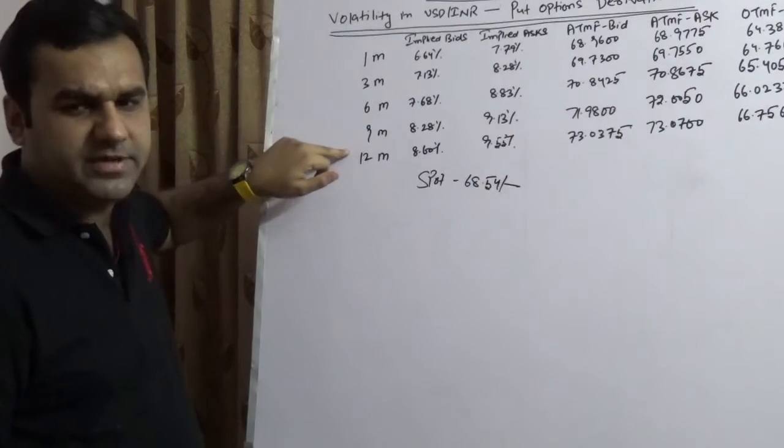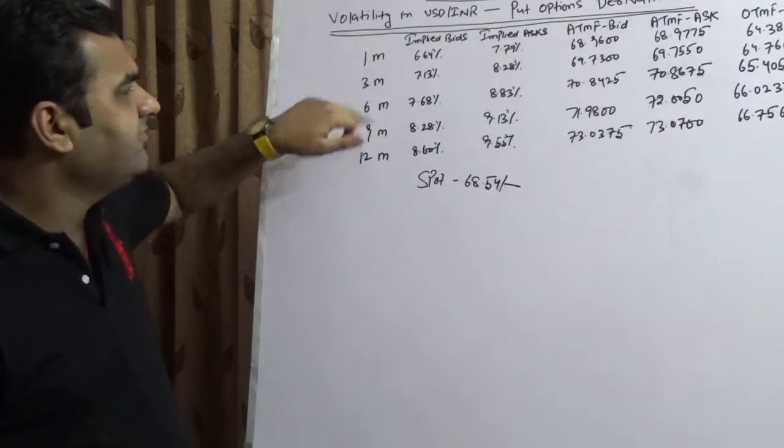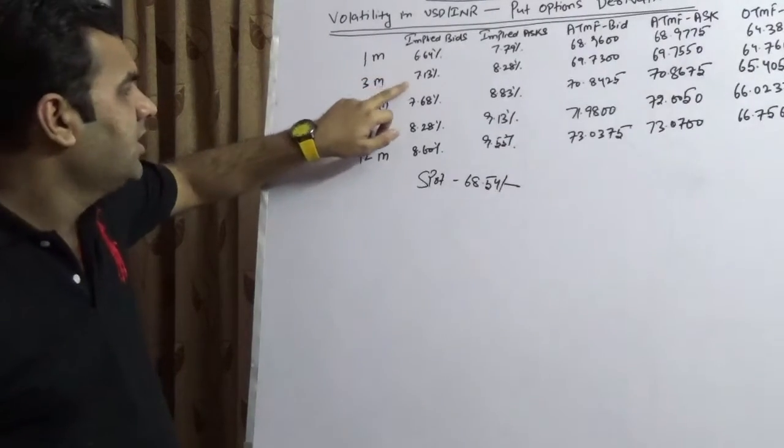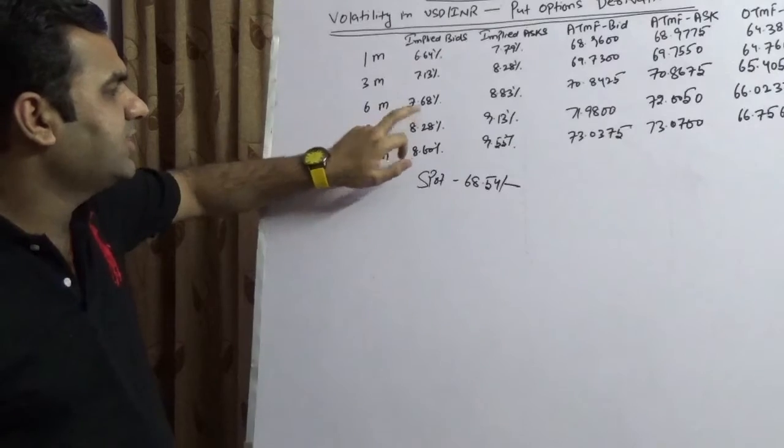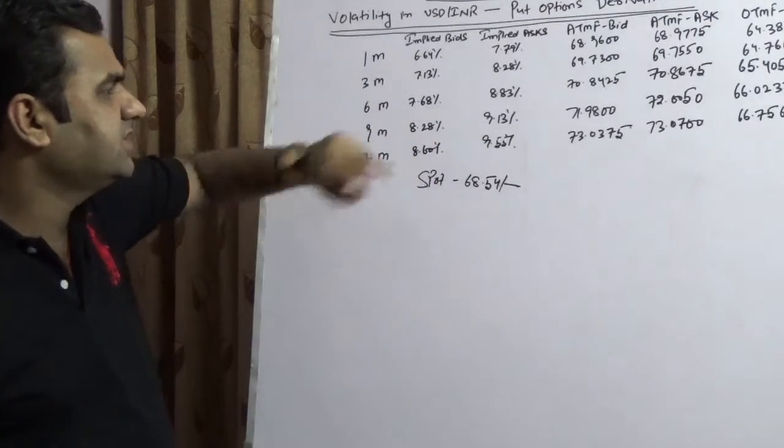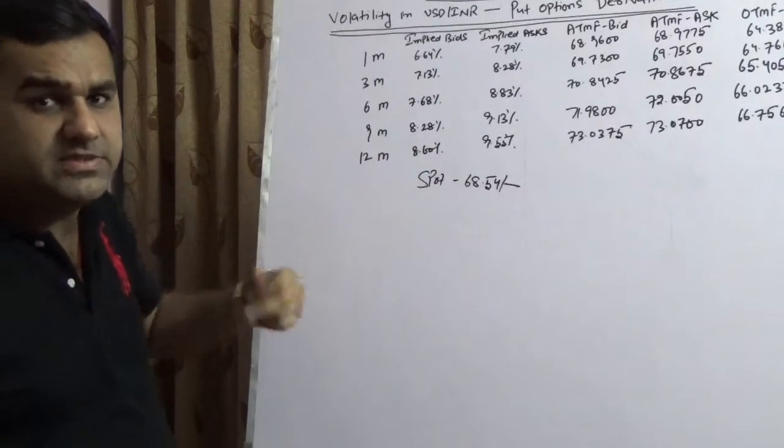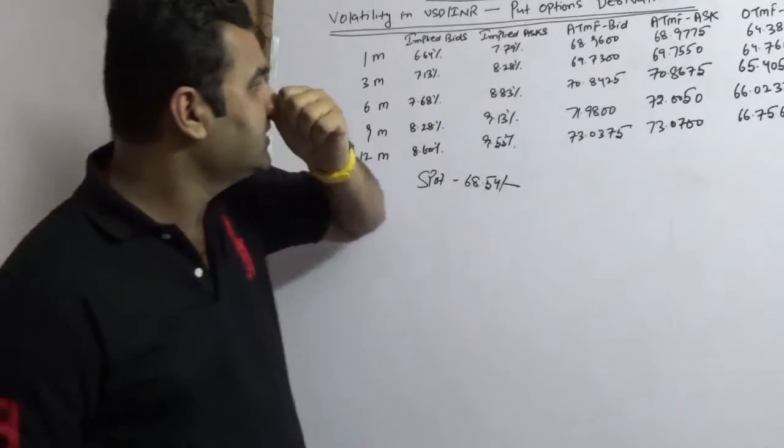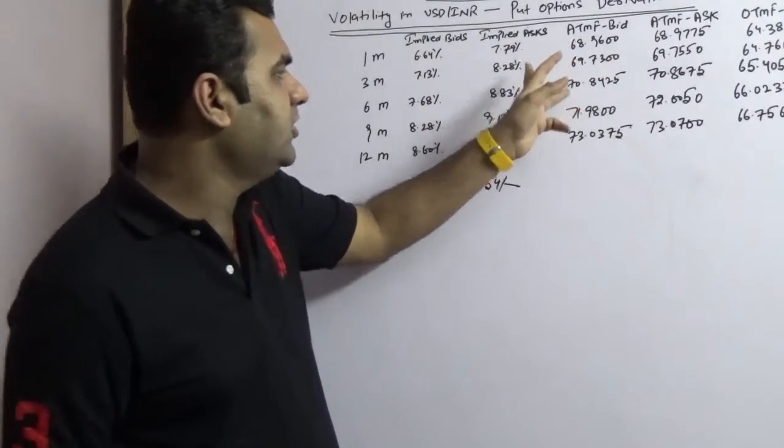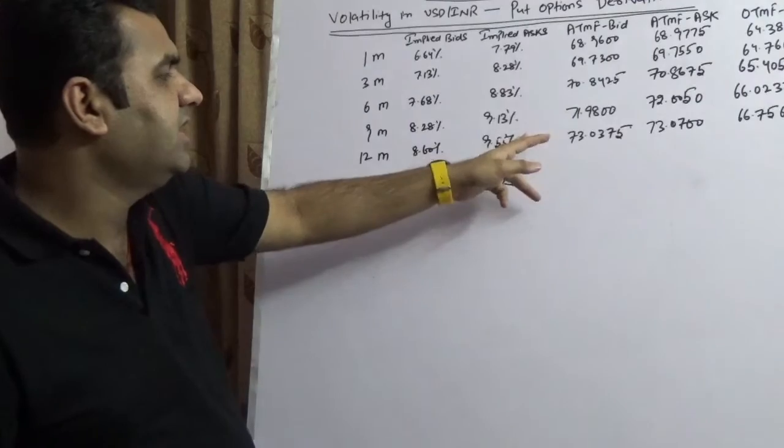We have assumed the period of 1 month, 3 months, 6 months, 9 months and 12 months. Now the implied volatility for 1 month is 6.64, 7.13, 7.68, 8.28 and 8.60 - this is for bids, meaning importer. And for ask this is 7.79, 8.28, 8.83, 9.13 and 9.55.